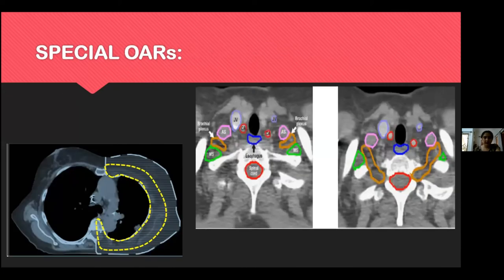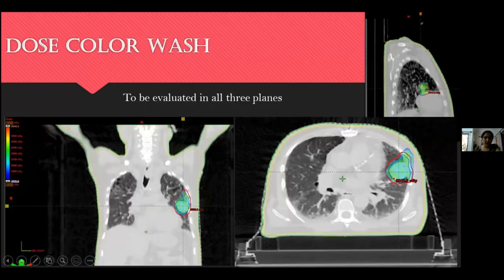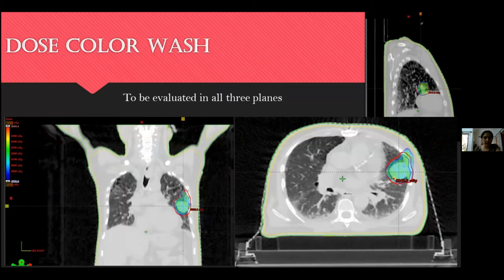Examples include brachial plexus contouring and chest wall contouring. The dose color wash in an SBRT case appears highly conformal with a very sharp dose gradient. The person contouring and evaluating the plan should review all three planes — not just axial — and make necessary corrections.